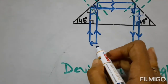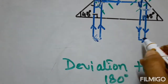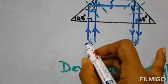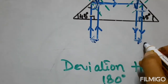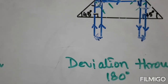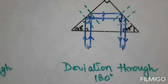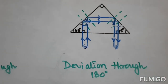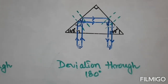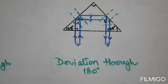Here we can see the object changes its side and becomes its image. We get the application of this action of a prism in a binocular and camera to invert the image without any loss of intensity of light.